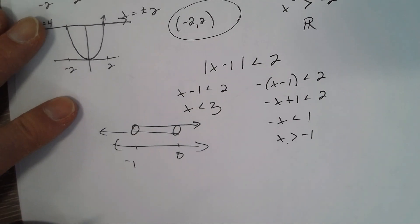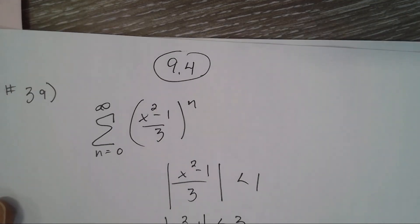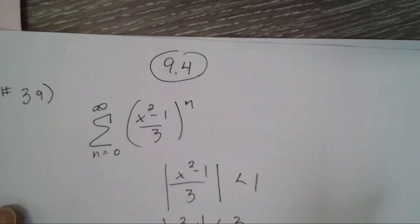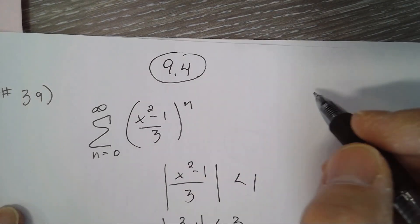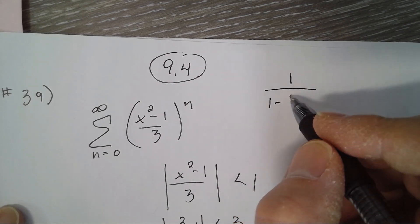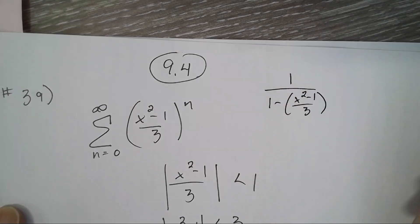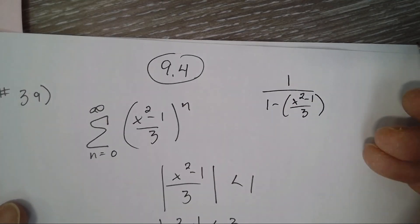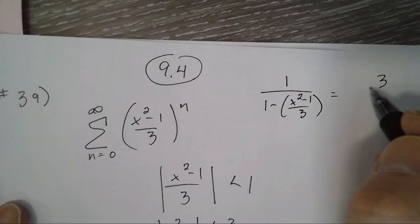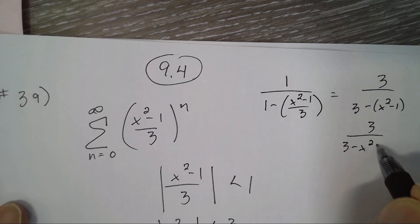All right, we also have to figure out how to write the sum of the series as a function of x. So the formula is 1 over 1 minus r, which is x squared minus 1 over 3. Multiply the top and bottom by 3, so 3 over 3 minus x squared minus 1. So 3 over 4 minus x squared.